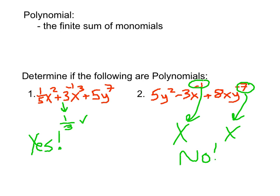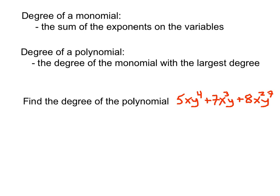Finally, the last thing we need to discuss is degree and the leading coefficient. An important characteristic of monomials and polynomials is the degree. In order to talk about the degree of a polynomial, we first need to find the degree of each monomial, because a polynomial is made up of monomials. We need to determine the degree of each one of those terms first, and then we can determine the degree of the polynomial.